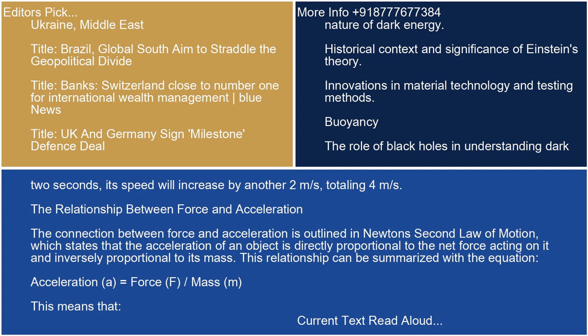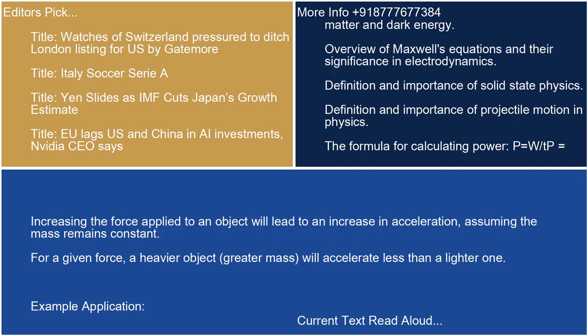The relationship between force and acceleration is outlined in Newton's second law of motion, which states that the acceleration of an object is directly proportional to the net force acting on it and inversely proportional to its mass. This relationship is summarized with the equation: acceleration equals force (F) divided by mass (M). Increasing the force applied to an object leads to an increase in acceleration, assuming the mass remains constant. For a given force, a heavier object (greater mass) will accelerate less than a lighter one.